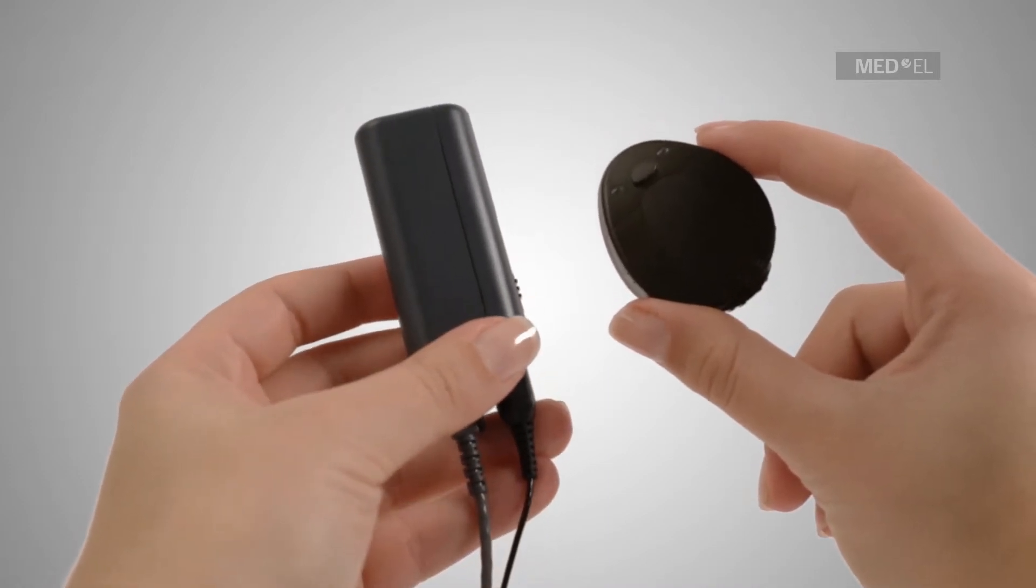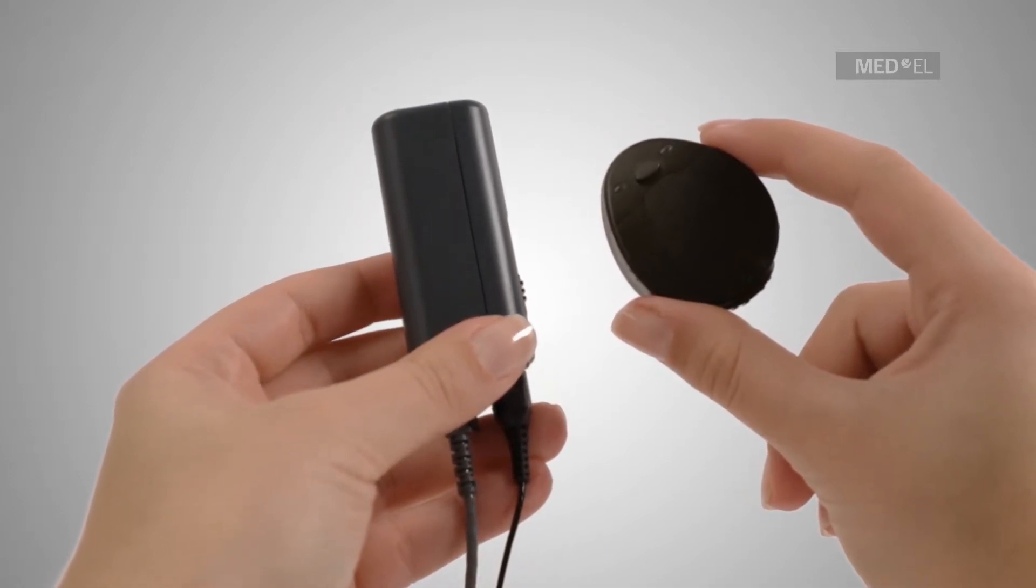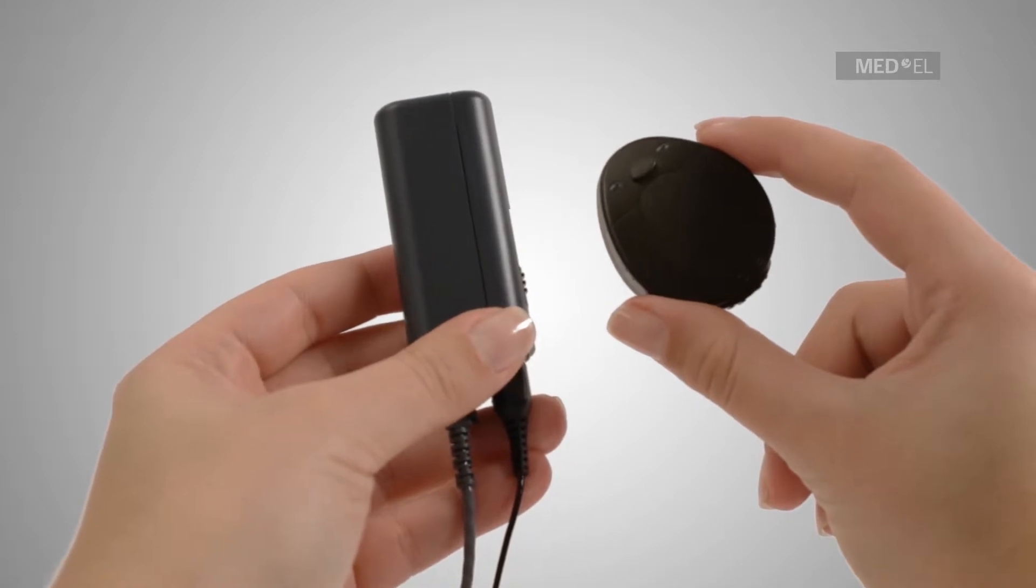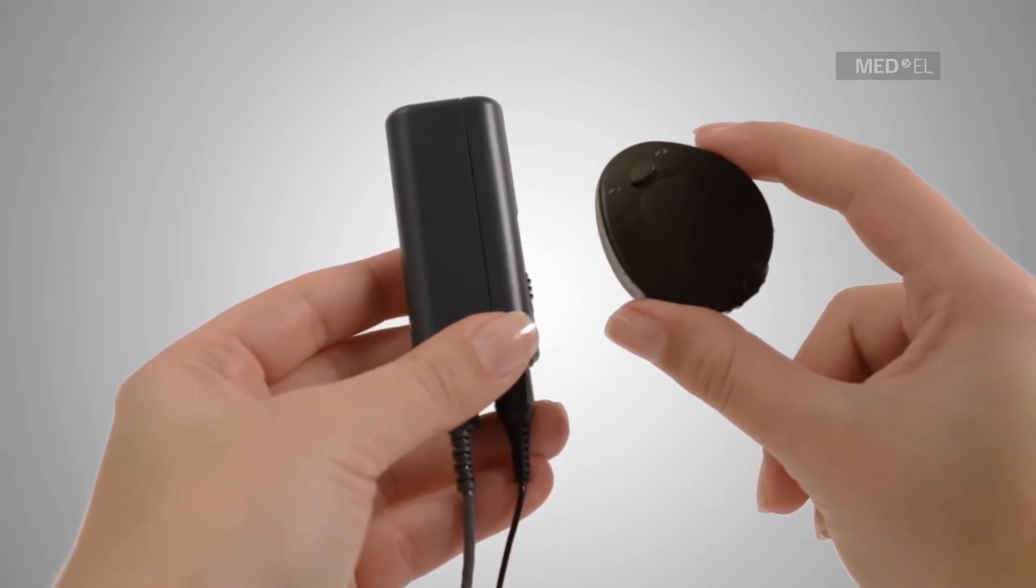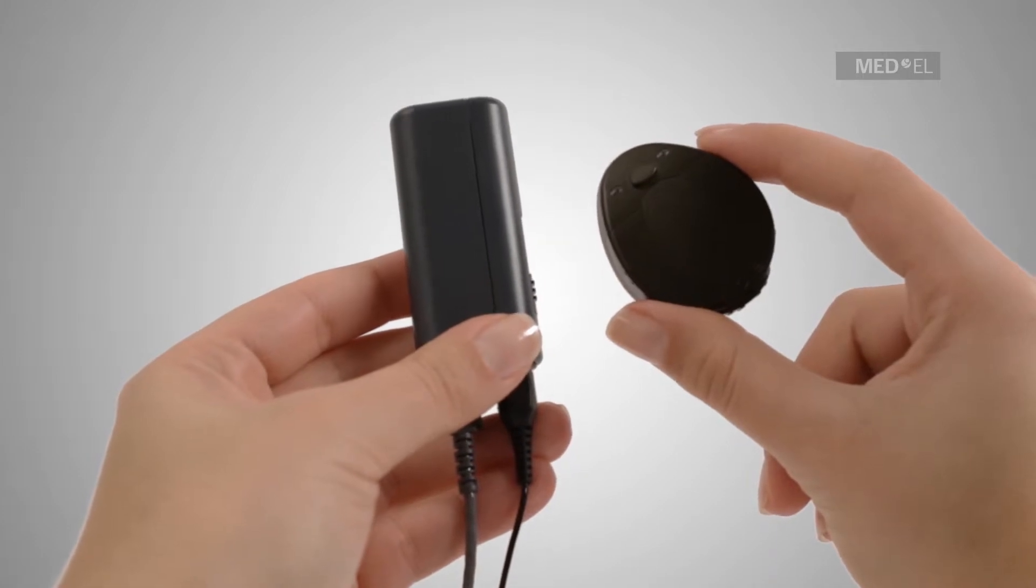The Mini Battery Pack is an alternative external power supply with additional connectivity options and is connected to the RONDO control unit via a connection cable.